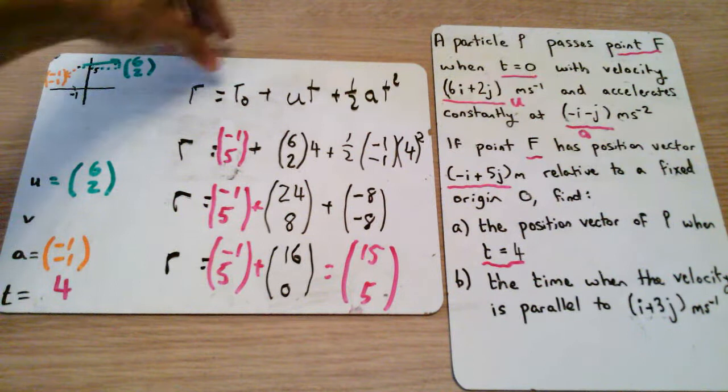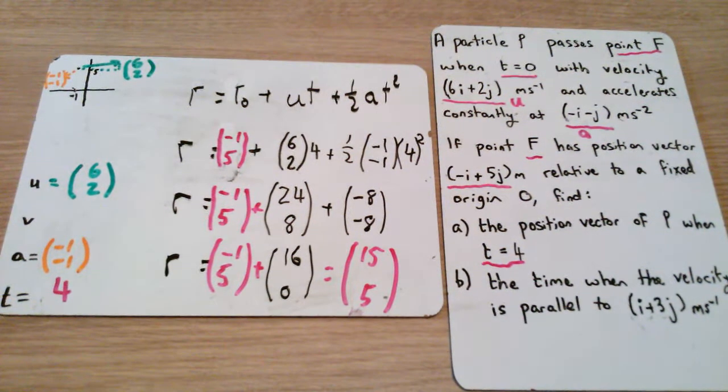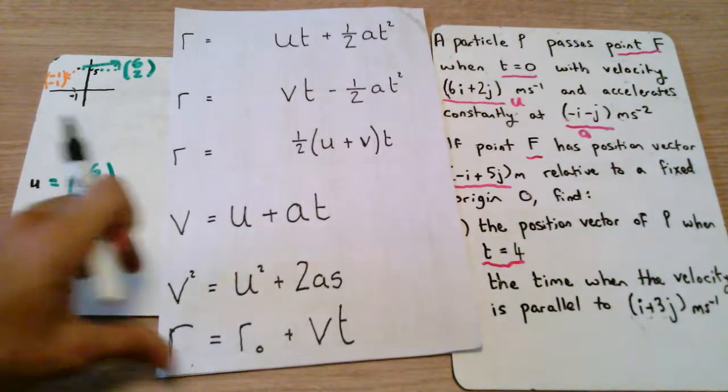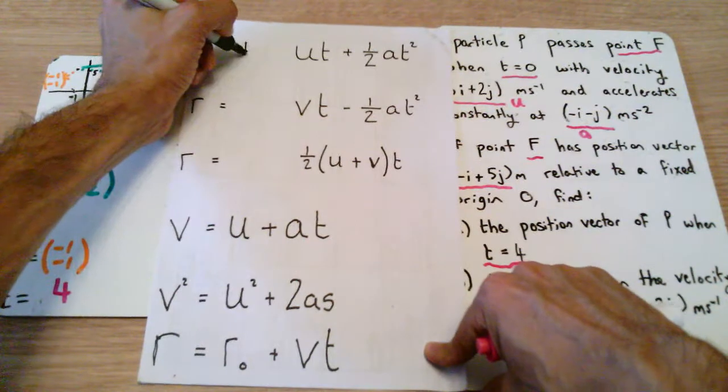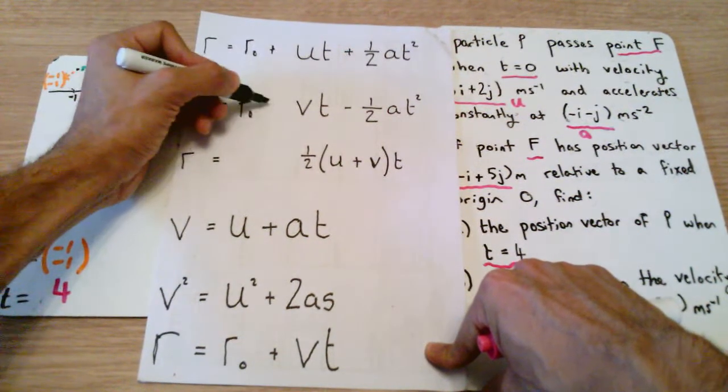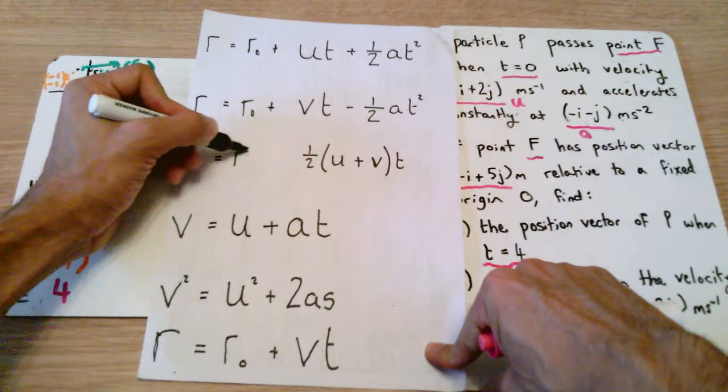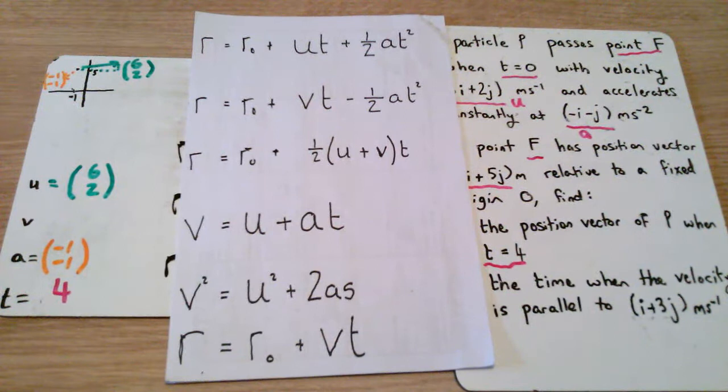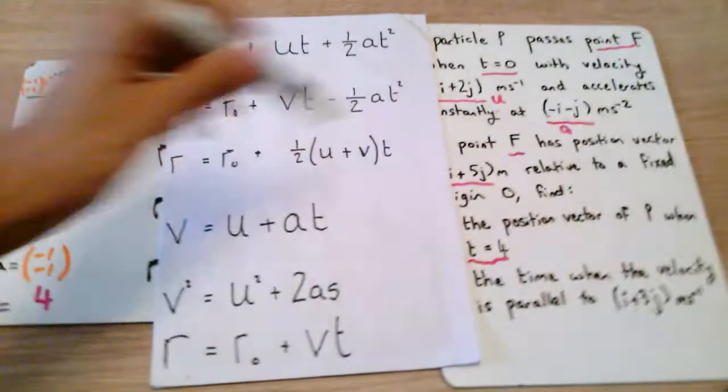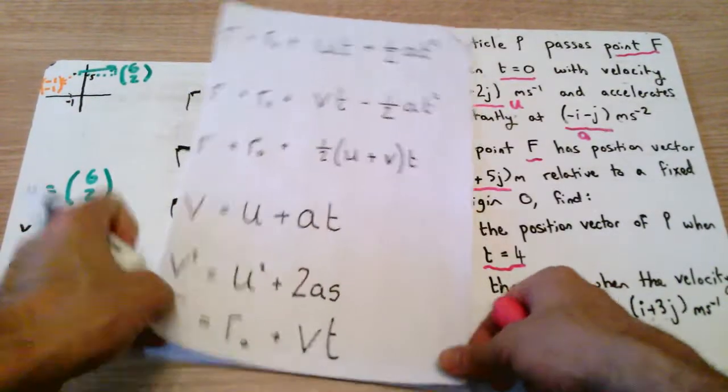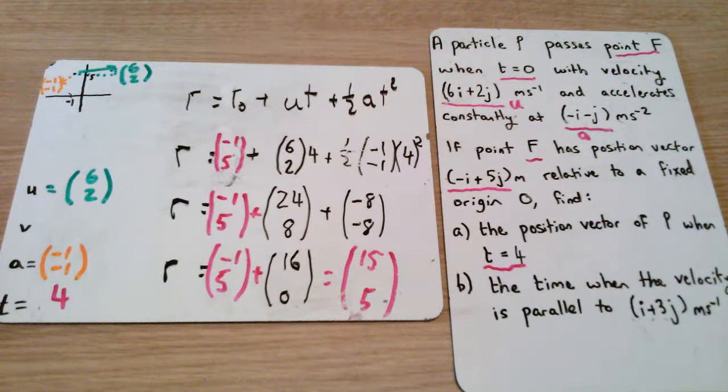That is the final position which we end up with. And this comes down to the fact that this is the formula that I use for these questions. I link together our two formulas from the beginning: r equals r0 plus ut plus half at squared, because everything is in relation to this original position. And that's part A done.